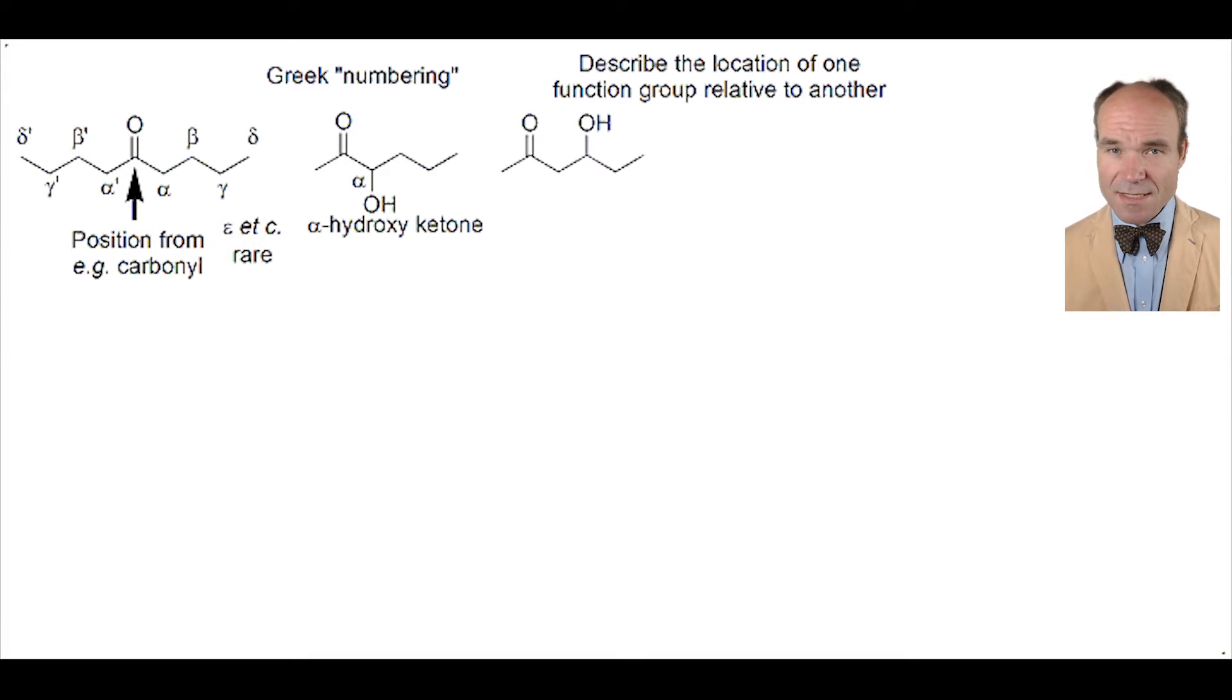In the next example, we have moved the alcohol one carbon further away from the ketone. So the alcoholic carbon is beta carbon. So we describe this arrangement of ketone and alcohol as beta hydroxy ketone.